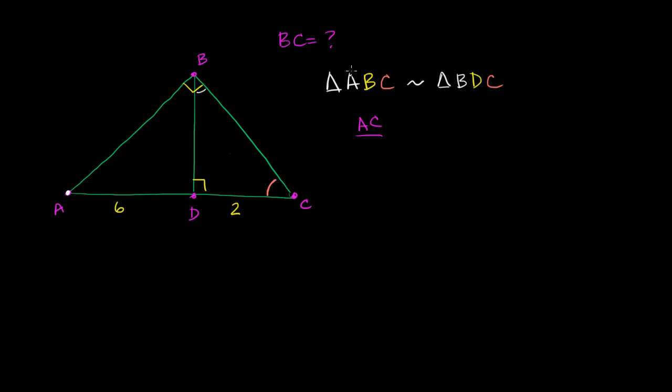So you can literally look at the letters. A and C is going to correspond to BC. The first and the third, first and the third. AC is going to correspond to BC.